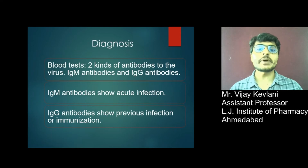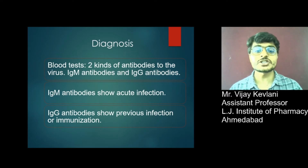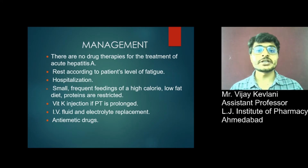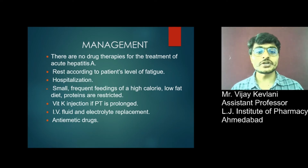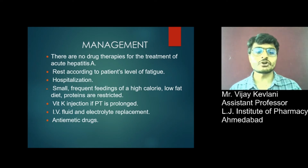Diagnosis can be made by blood test. Two immunoglobulins are identified: Immunoglobulin M and Immunoglobulin G. Immunoglobulin M antibodies indicate acute infection, while Immunoglobulin G antibodies indicate previous infection or immunization. For management, there are no drug therapies for acute Hepatitis A. Treatment includes rest according to the patient's level of fatigue, hospitalization if required, small frequent feedings of a high-calorie low-fat diet, restricted proteins, Vitamin K injection if prothrombin time is prolonged, and IV fluid and electrolyte replacement.